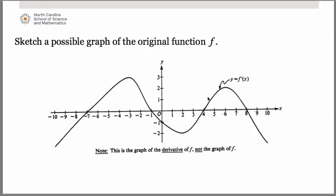I've added a fourth question so we can look at how to come up with a possible graph of the original function f from the graph of its derivative — tying together everything we've discussed. Questions like this still appear on the AP exam today. To start sketching a possible graph of the original, let's begin with key points we know will be on the graph. The x-intercepts of the derivative graph become our max and min points on the original. Let's place those in first, working left to right. Our first x-intercept is at negative 7.